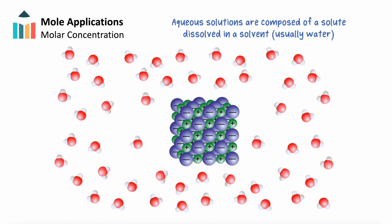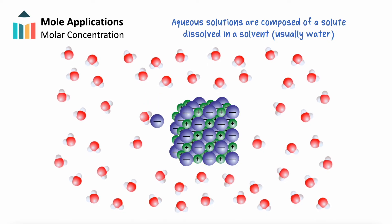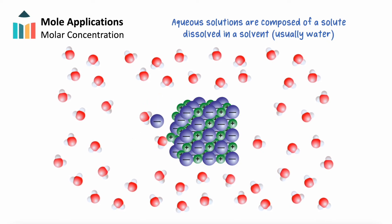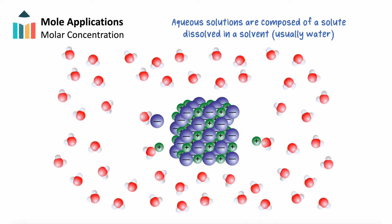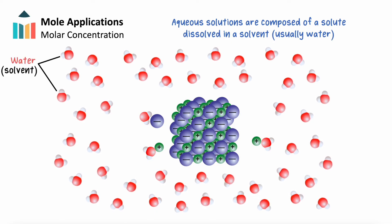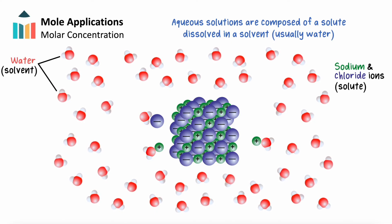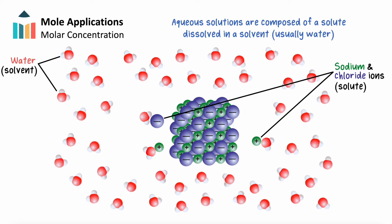Recall the basics of solutions, which are composed of a solute dissolved in a solvent, which is generally water, thus the term aqueous. In an aqueous solution of, say, sodium chloride, we have a substance that is composed mostly of water, the solvent, with sodium and chloride ions dispersed uniformly throughout as the solute.